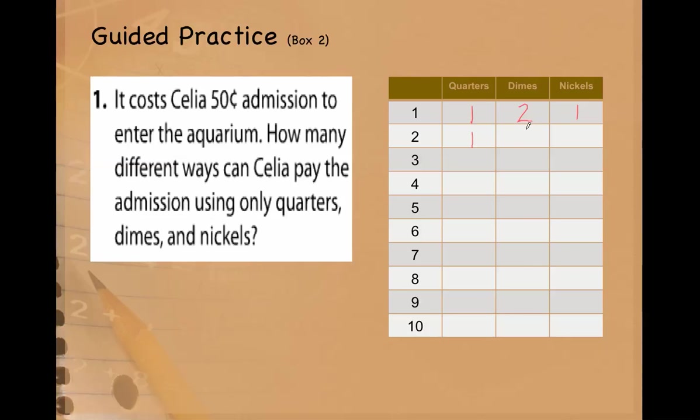So that would be 25. How about if we have no dimes? So we need another 25 using nickels. That would be five nickels. Five nickels is 25. So 25 and 25 is 50.